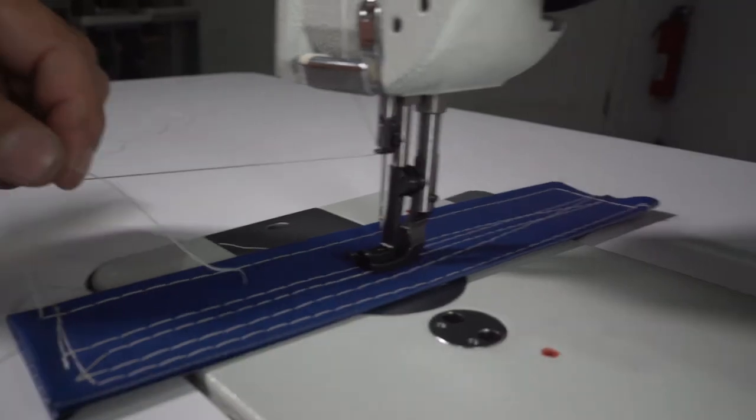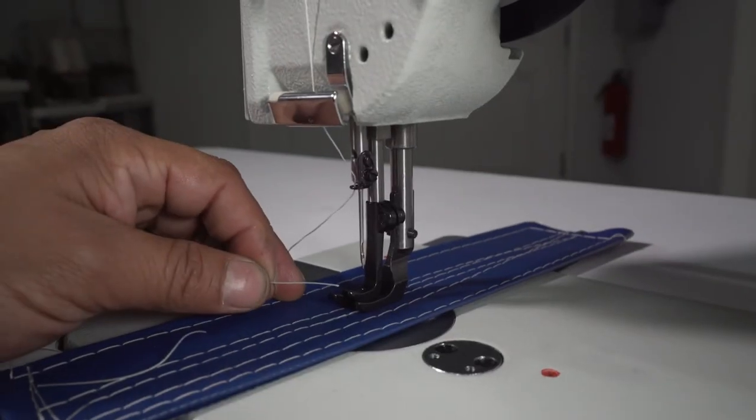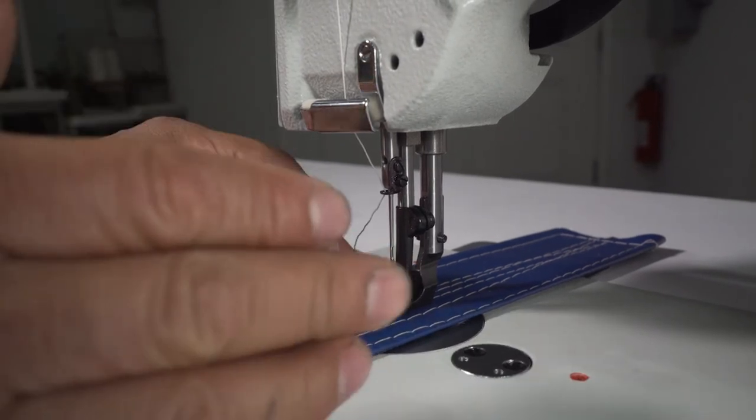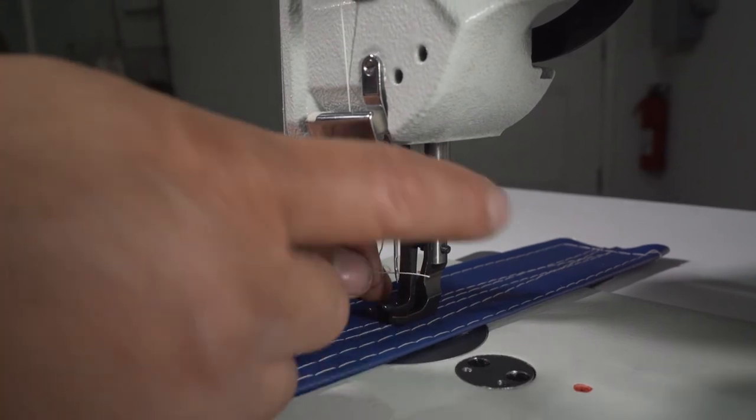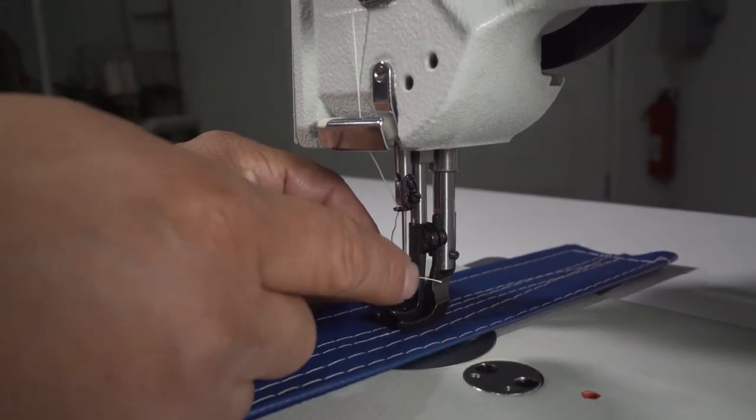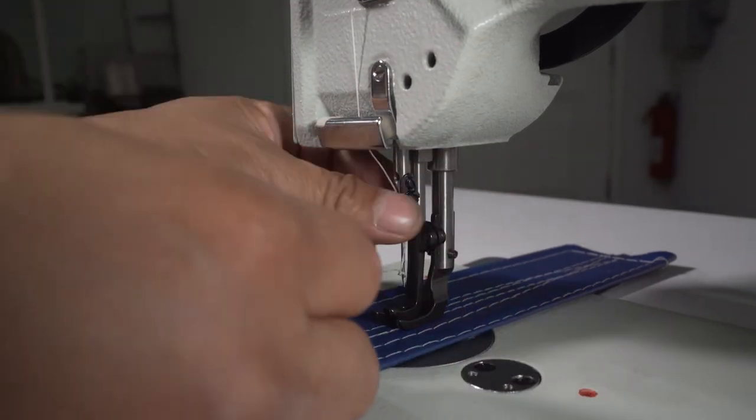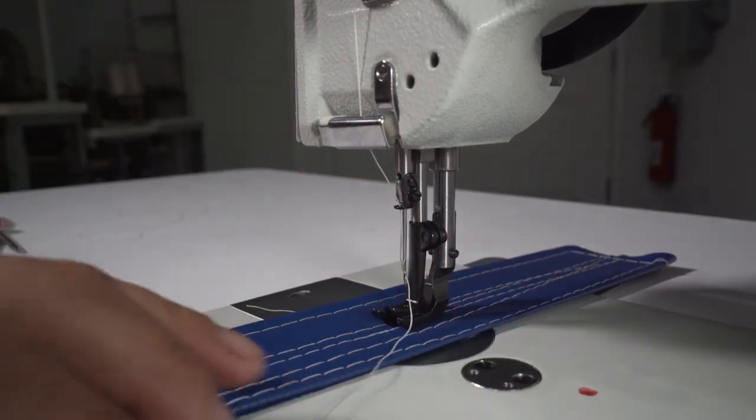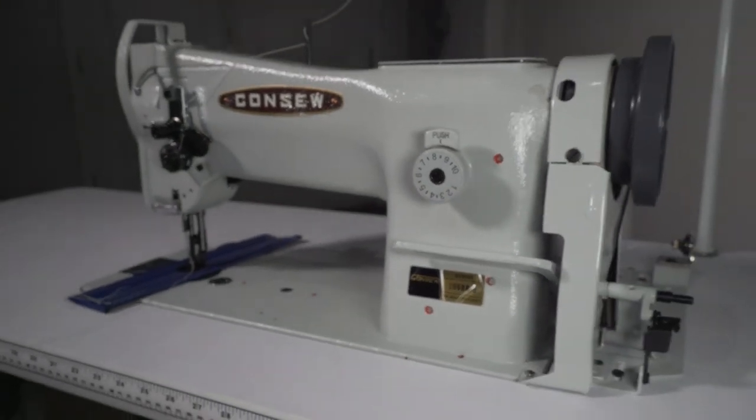And now I'm going to cut this thread and thread into the needle. So the direction is from left to right. I have the scarf on the right side, the scarf in the middle. So now we know how to thread the machine 206RB, and many machines are similar to this one.